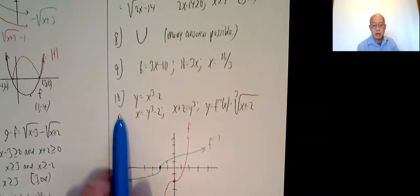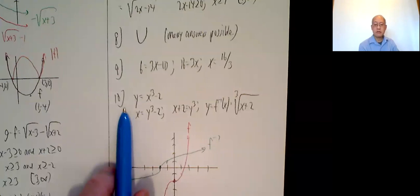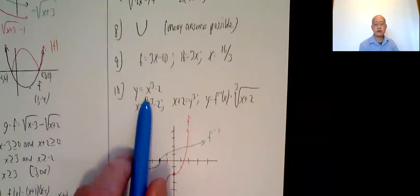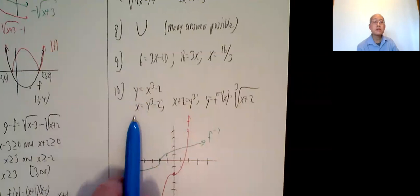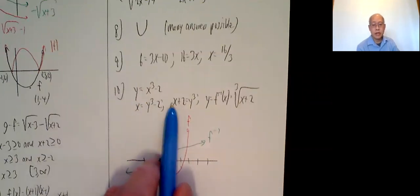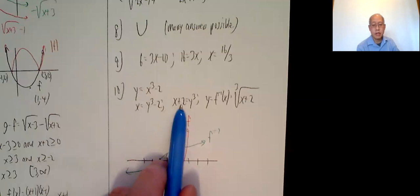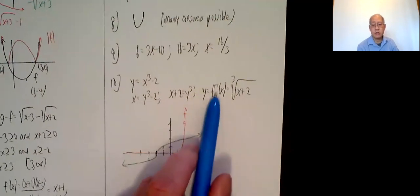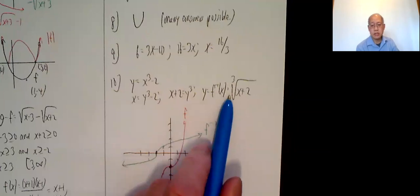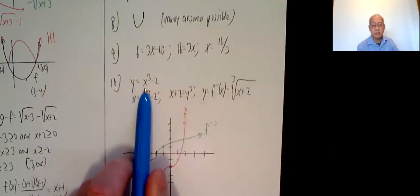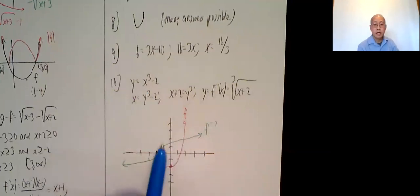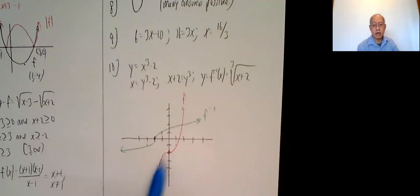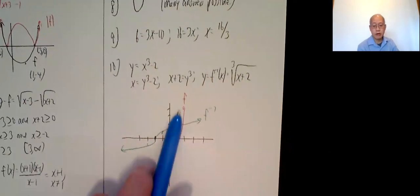Finally, 10. f of x equals x cubed minus 2. Call it y equals x cubed minus 2. Switch around x and y. x equals y cubed minus 2. Add 2, x plus 2 equals y cubed. Take the cube root. So y equals f inverse of x, which is the cube root of x plus 2. Graph them on the same set of axes. Take your basic x cubed function, which goes through the origin, and shove it down 2 units. So that gives me the point 0 comma negative 2. General cubic function looks like that.